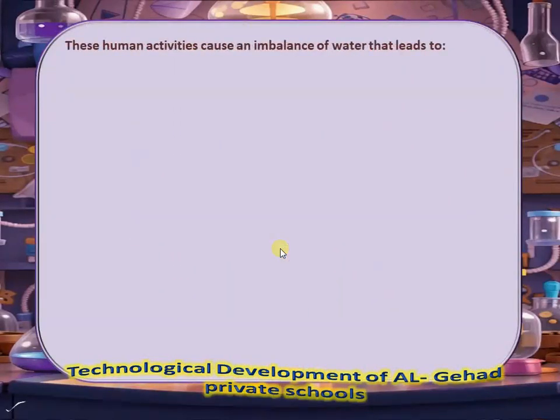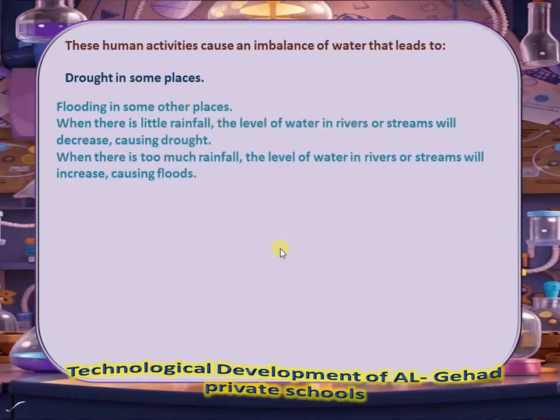These human activities cause an imbalance of water that leads to drought in some places and flooding in other places. When there is heavy rainfall, the level of water in rivers or streams will increase, causing floods.